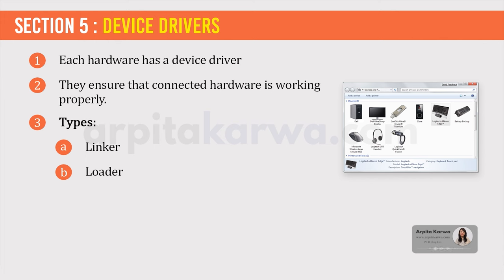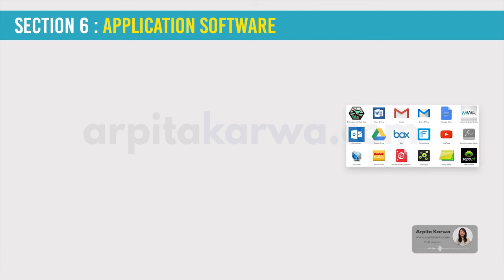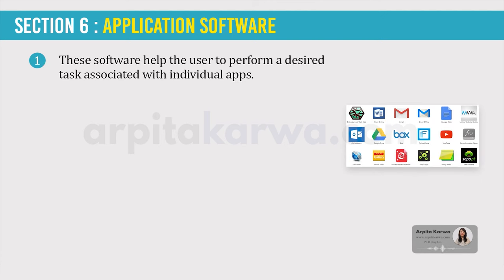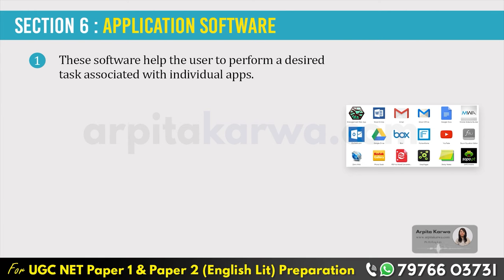We are done with system software — they are used to run the computer properly. The next category is application software. Application, in short, is called an app, and we use apps on our phone. Similarly, these apps exist in the computer too — like Microsoft Word, Paint, Microsoft Presentation, etc. These are called End User Programs because the person working on the computer uses them. These programs are not helping in the functioning of the computer, but helping the user to perform a desired task. That's why they are called End User Programs.